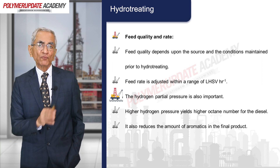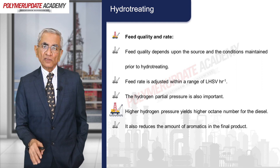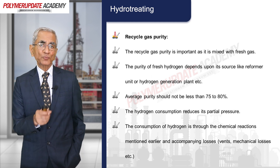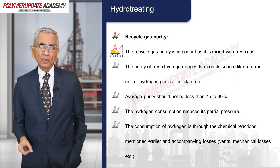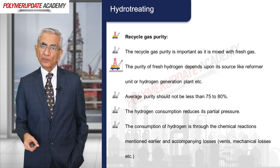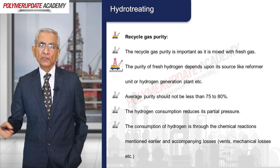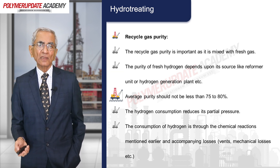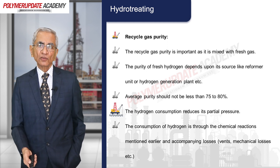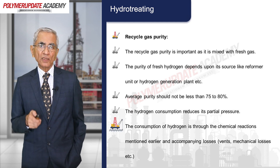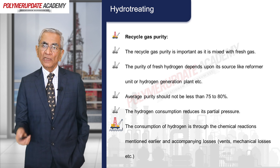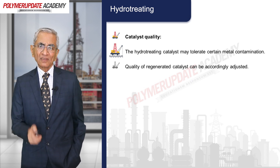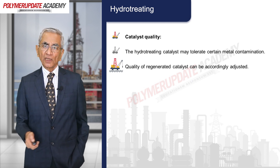The hydrogen partial pressure is very important — higher hydrogen pressure improves the cetane number for diesel and also reduces the amount of aromatics in the final product. Recycle gas purity is critical as it is mixed with fresh gas; the purity of fresh hydrogen depends upon its source, whether from a reformer unit or a hydrogen generation unit. Average purity should not be less than 80%. Hydrogen consumption reduces its partial pressure through chemical reactions and accompanying losses. The hydrotreating catalyst may tolerate certain metal contaminants, and the quality of regenerated catalysts can be adjusted accordingly.